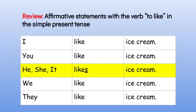Let's review affirmative statements with the verb 'to like' in the simple present tense. I like ice cream. You like ice cream. He, she, it likes ice cream. We like ice cream. They like ice cream.